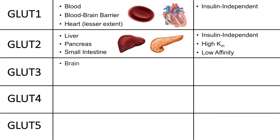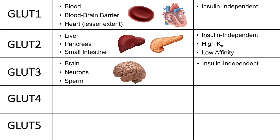The next glucose transporter is GLUT3, found in the brain neurons and also in sperm. This one is also insulin independent. The key point with GLUT3 is that it has a low Michaelis-Menten constant, meaning it has a very high affinity for glucose. So the brain and its neurons always take up glucose with high affinity — if there's any glucose present at all, they will take it up. GLUT3 is typically always saturated with glucose, ensuring the brain maintains its metabolism regardless of what's happening in the rest of the body.